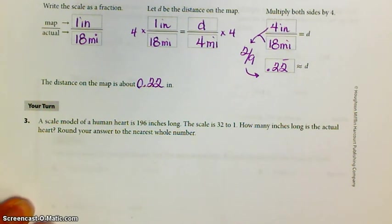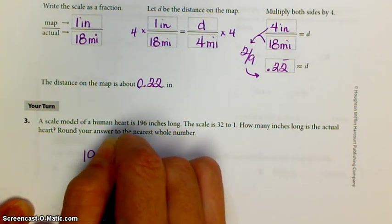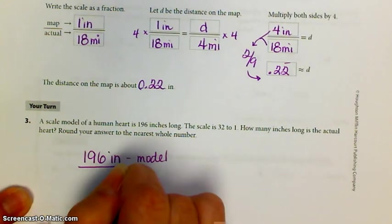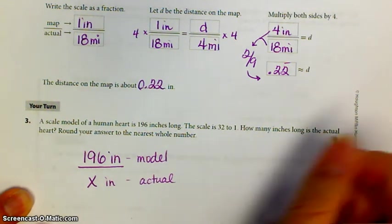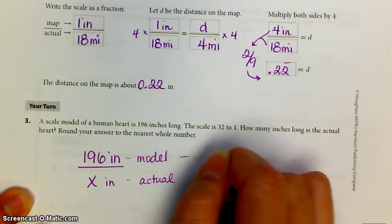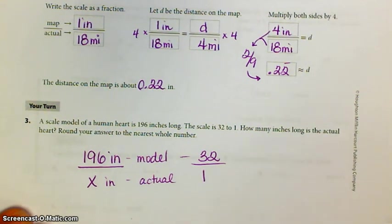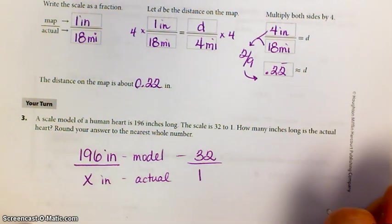A scale model of a human heart is 196 inches long. They've made a big model of a human heart. The scale is 32 to 1. How many inches long is the actual heart? They've blown up and enlarged the heart so people can take a nice, careful look at it.